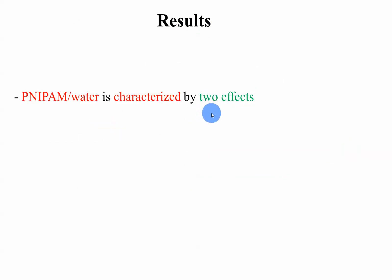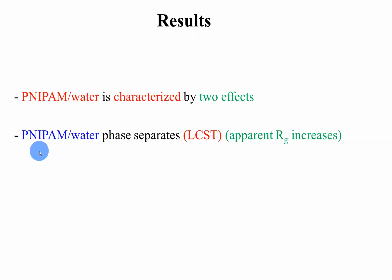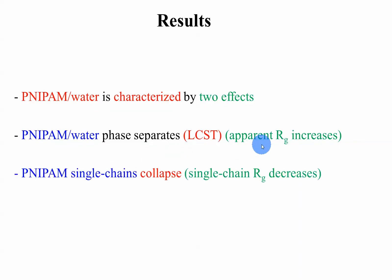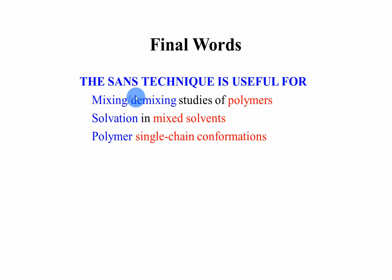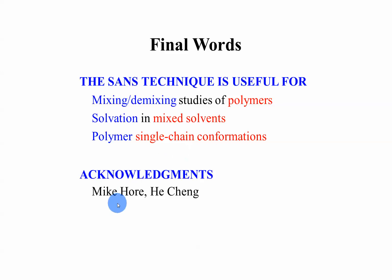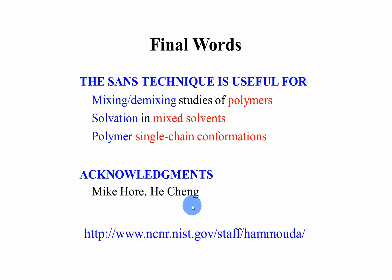Phase separation involves two effects here: chains are shrinking — partial chain collapse — while they are phase separating. Results: this system has two effects — phase separation at LCST around 32 degrees C, as well as chain collapse or partial collapse, with single chain Rg decreasing. Final words: SANS technique is used for mixing-demixing studies of polymers, solutions in mixed solvents, solvation in mixed solvents, and polymer single chain conformations. It's useful for these types of studies. Acknowledgement: Michael Hoare and Hu Chang. Thank you.